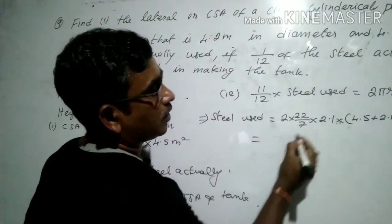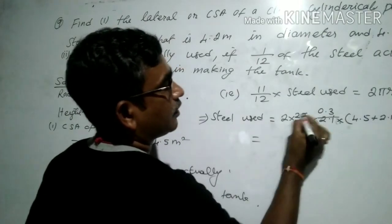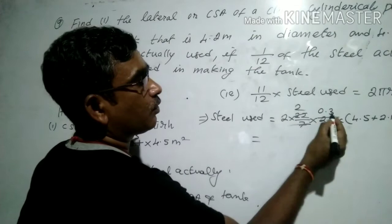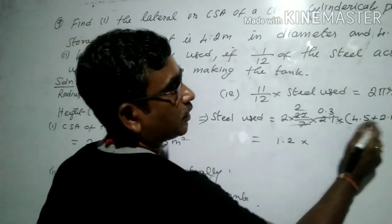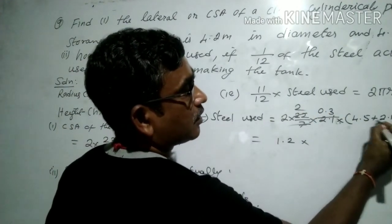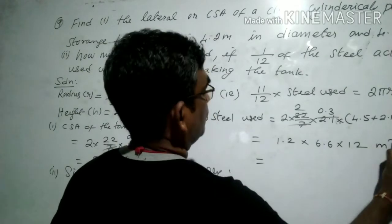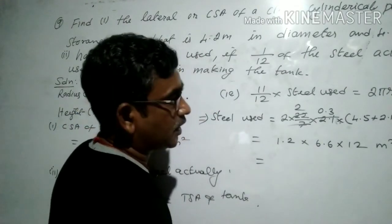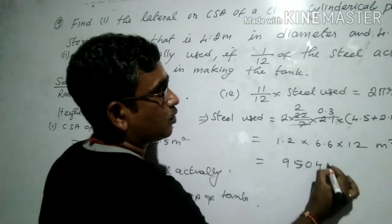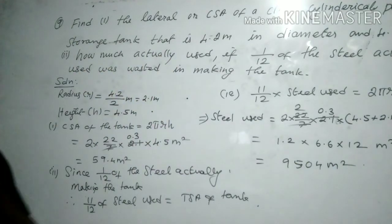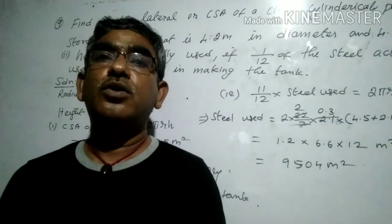Simplifying: 7 cancels with 2.1 giving 0.3; 22 × 2 = 44; 4.5 + 2.1 = 6.6. So we get 1.2 × 6.6 = 7.92, then 7.92 × 12 = 95.04, divided by 11 — wait, multiplying 1.2, 6.6 and 12 gives 95.04. So the steel actually used is 95.04 meter square to make the tank.